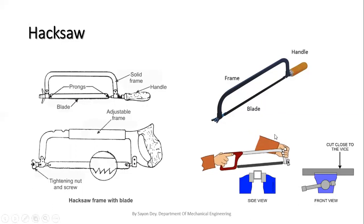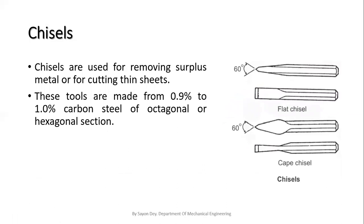Next are chisels. We can see pictures of some chisels — flat chisel and cape chisels. Chisels are used for removing surplus metal or for cutting thin sheets. These tools are made from 0.9 percent to 1 percent carbon steel of hexagonal or octagonal section. The cutting angle of the chisel for general purpose is 60 degrees. A flat chisel is the common chisel used for chipping and for thin sheet metal operations. A cape chisel is a narrow shape tool used mostly for chipping grooves.